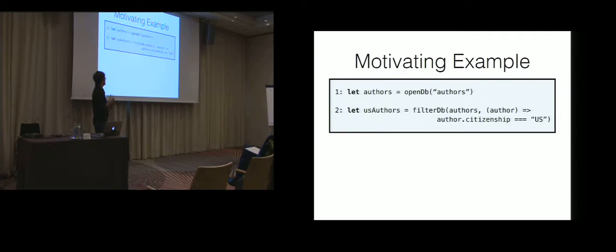And then imagine that we use some sort of database library in our extensible language that has this call called OpenDB. So what authors is, is now this database of author information. And all the authors maybe are objects with fields, like maybe they have citizenship fields and name fields and stuff. So we can do these combinators, like we want to filter our database and now get a sub-database that's just the authors from a particular country.